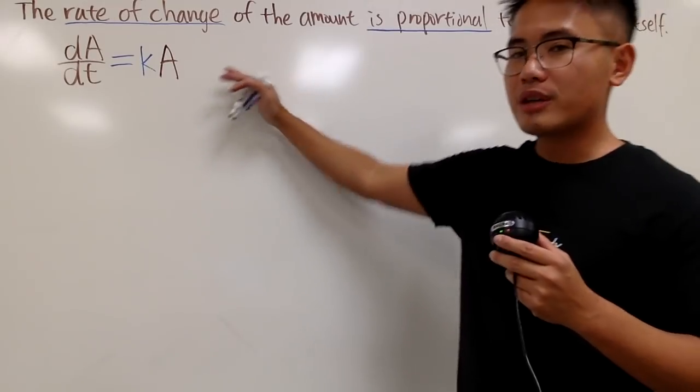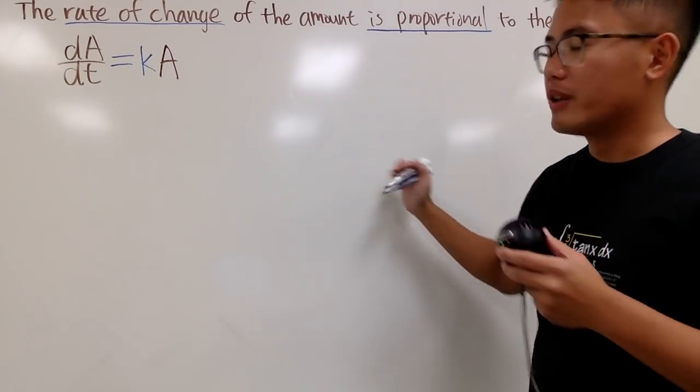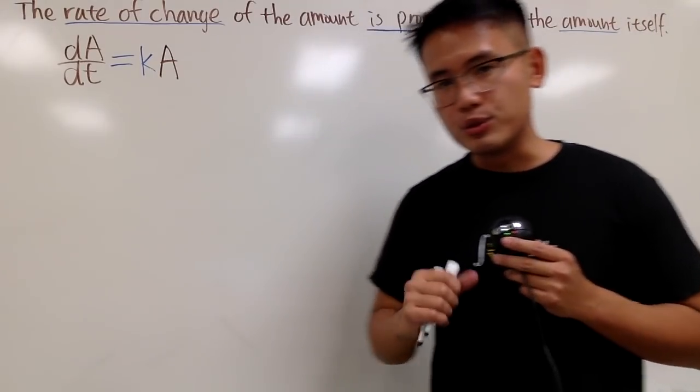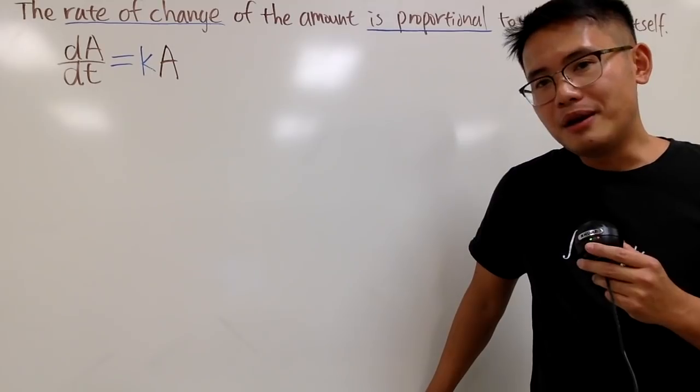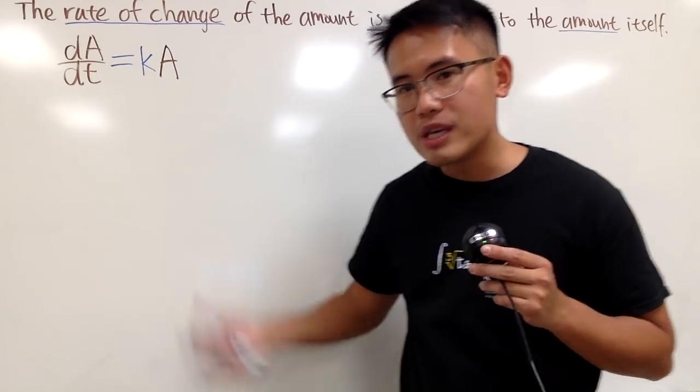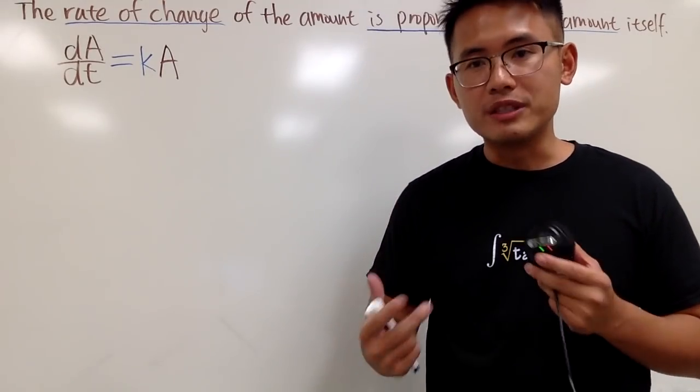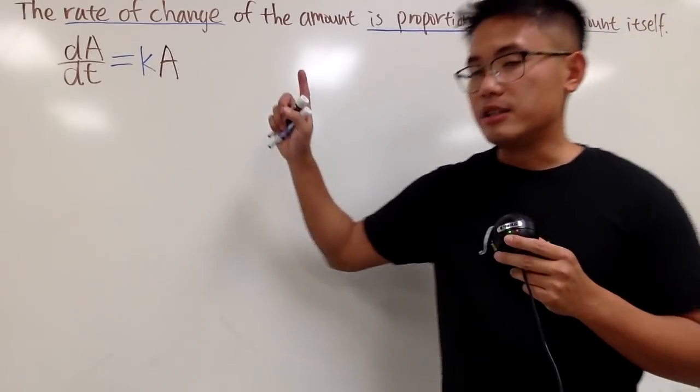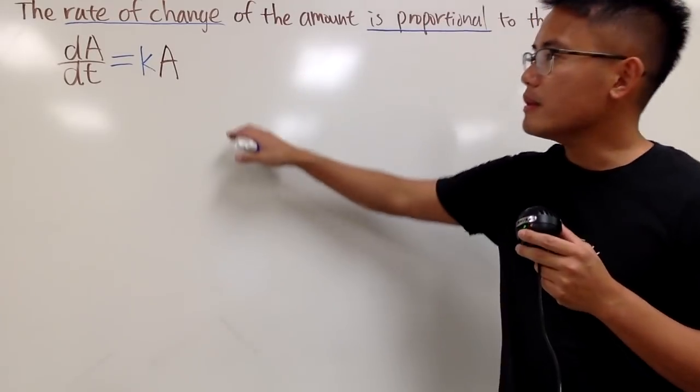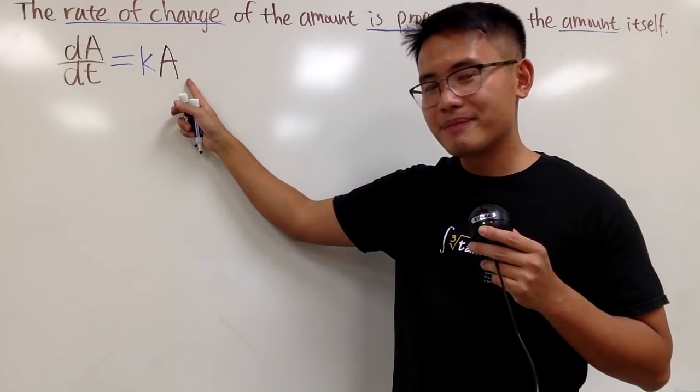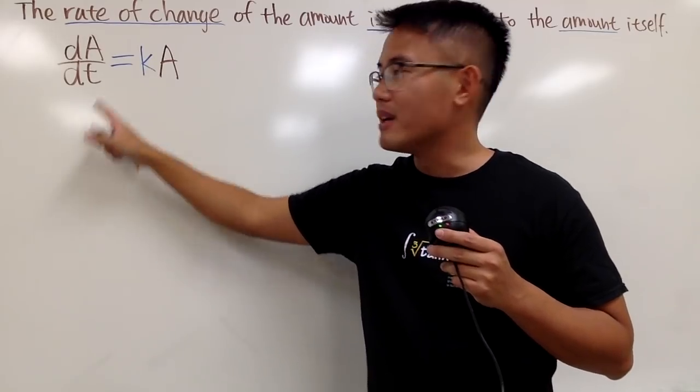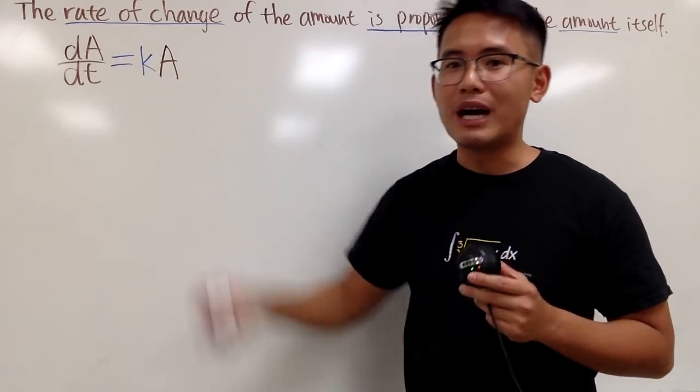And of course, if you have initial conditions, you can solve for the unknown constants later on. But let's just go through how to solve this right here. And we'll find the general solution. And here is the powerful part before we continue. This right here, as I said, is how we come up with the exponential growth equation or the decay equations. This is really powerful if you're talking about investing. For example, if you have a lot of money, it's much easier for you to make even more money because the rate of change is proportional to how much money you have.